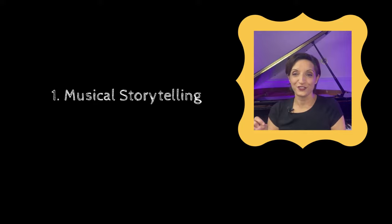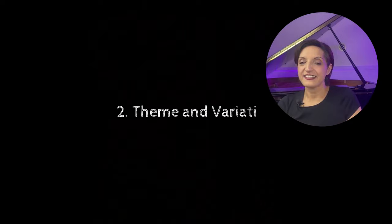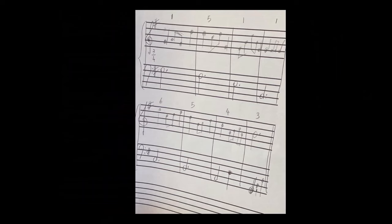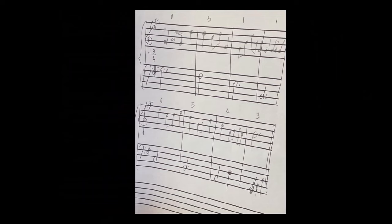I ask students to write or draw a short story and then connect the different parts of their story to sounds. Another of my favorite exercises is theme and variation. Students are given a simple melodic theme and encouraged to create variations by altering the rhythm, harmony, and dynamics. This exercise enhances melodic development and fosters their ability to manipulate music creatively.